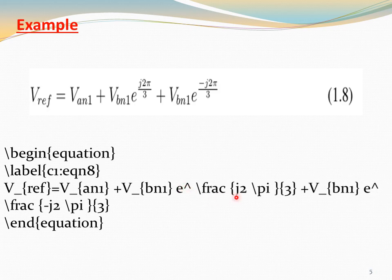The numerator is j2\pi and the denominator is 3, plus V_{b1} exponential with numerator minus j2\pi and denominator j2\pi. Execute these equations to get the final equation.